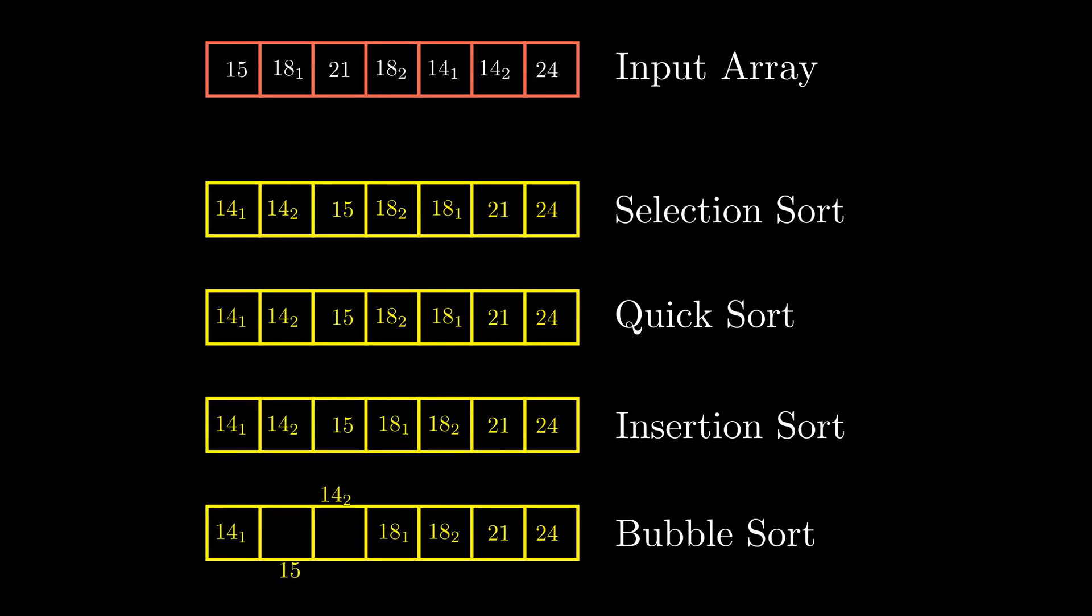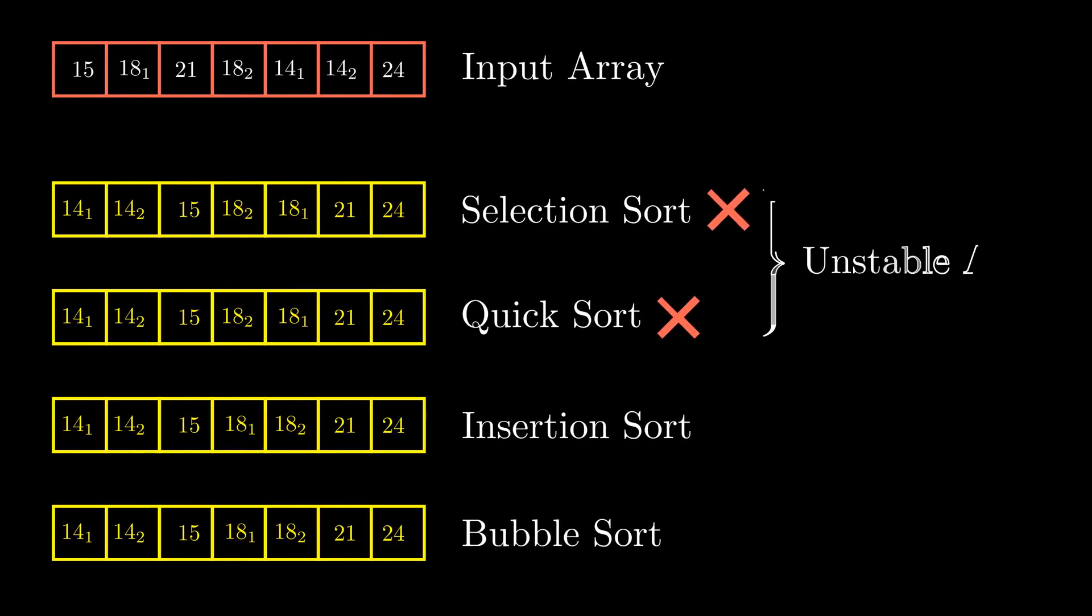As you can see, selection sort has swapped the order of the two 18s, so it is not a stable sorting algorithm. Quick sort has done the same, so it is also not a stable sorting algorithm.